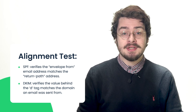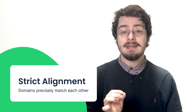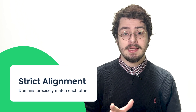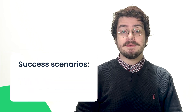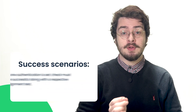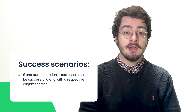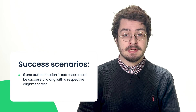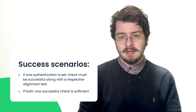If both authentications are set, both alignment tests are performed. The alignment test requirements can be strict or relaxed. It is strict when the domains must precisely match each other, and it is relaxed when different subdomains are allowed. DMARC will be successful in the following scenarios: if only one authentication method is set, its check must be successful alongside the respective alignment test. If both methods are set, only one needs to be successful in its respective alignment test.